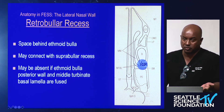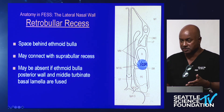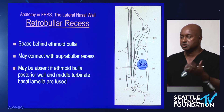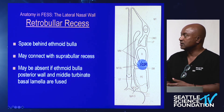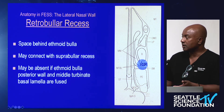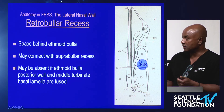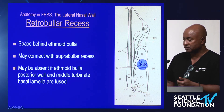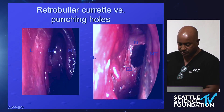The basal lamella of the middle turbinate inserts on the medial orbital wall. If you're unsure where the medial orbital wall is, back up: find the uncinate region, find the middle turbinate, find the medial orbital wall, go across with the scope, and there it is. Now you can use it as an anatomical landmark to dissect posteriorly through the posterior ethmoids.